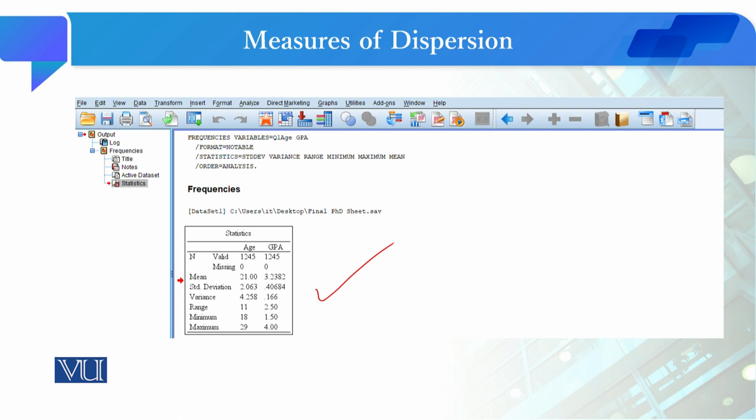We know that age has a mean of 21, standard deviation of 2, variance of 4, range of 11, minimum value of 18, and maximum value of 29.